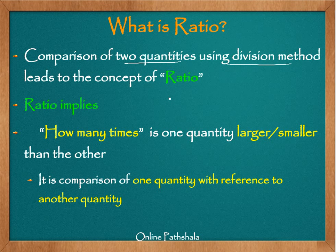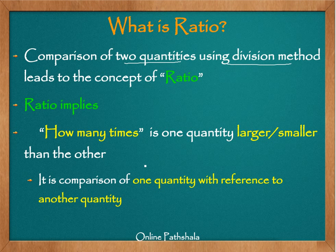Ratio simply equates to comparing two quantities using division. In other words, ratio can be defined as how many times is one quantity larger or smaller than the other. That is what is more important, because that is what the division leads us to — it is comparison of one quantity with reference to another quantity.